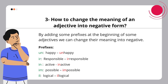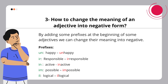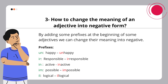Prefixes: un-, il-, in-, im-, il-. Examples: happy → unhappy, responsible → irresponsible, active → inactive, possible → impossible, logical → illogical.